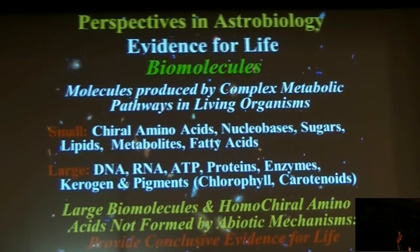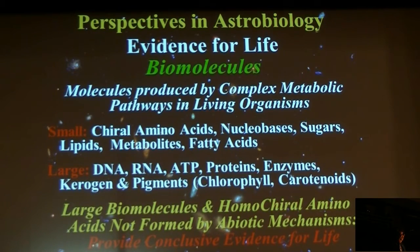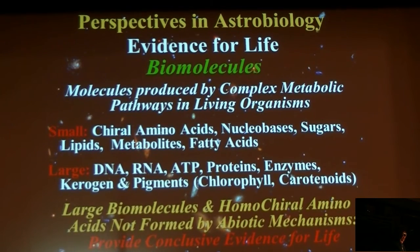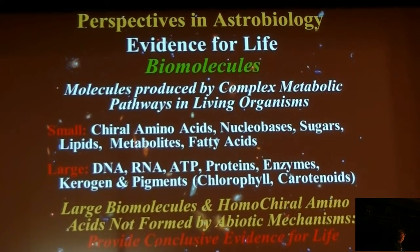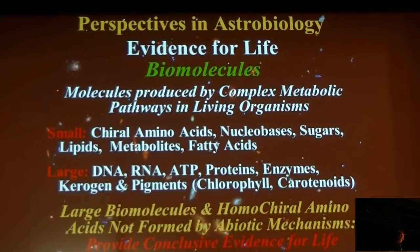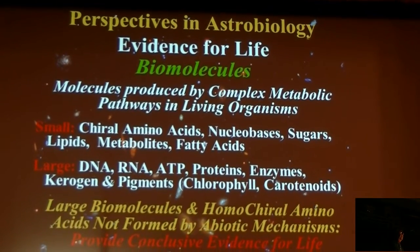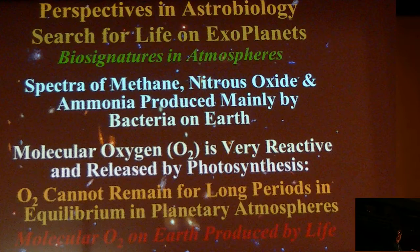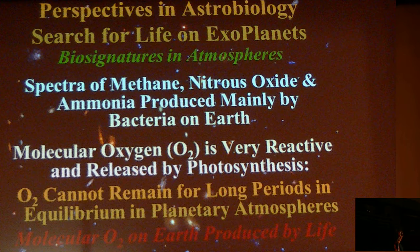There are a whole host of biomolecules which are very important. The very large biomolecules cannot be produced by any known abiotic mechanisms, and therefore the detection of these large biomolecules or the detection of homochirality would provide absolutely undeniable proof of the evidence of life. Biosignatures in atmospheres can also be used — for example, looking for molecular oxygen, which is very reactive and released by photosynthesis. It can remain for long periods in equilibrium in planetary atmospheres, and on Earth molecular oxygen is produced by biology.